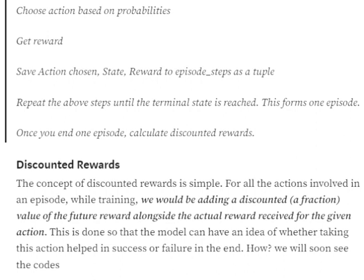Once we have an episode, we calculate discounted rewards for all actions. The idea is: assume we took five steps — left, right, left, left, right — and succeeded. The last action taken is considered the most important, and the earlier an action was taken in the episode, the less important it becomes. So for every action at a particular state, alongside the actual reward, we calculate a discounted reward. This is the current reward plus a discounted fraction of future rewards, using a discount factor like 0.8 or 0.99, so the model knows whether that action will help in the future.